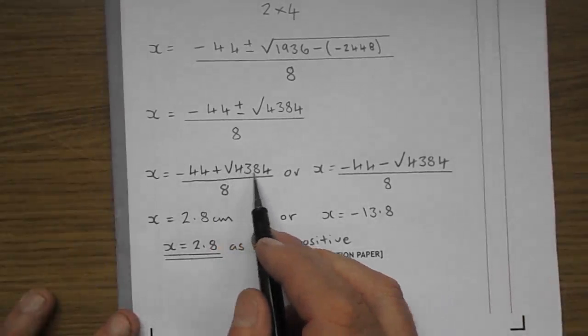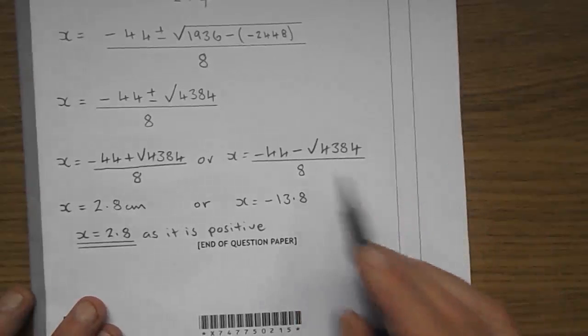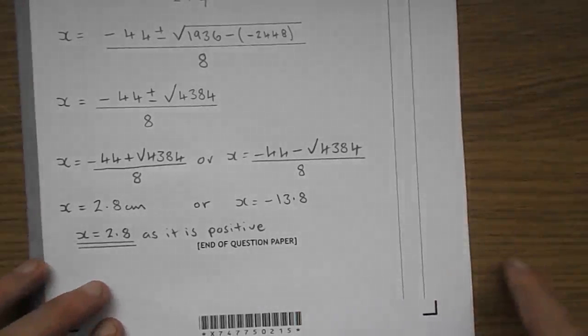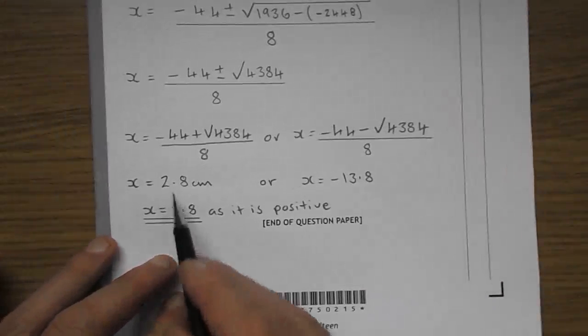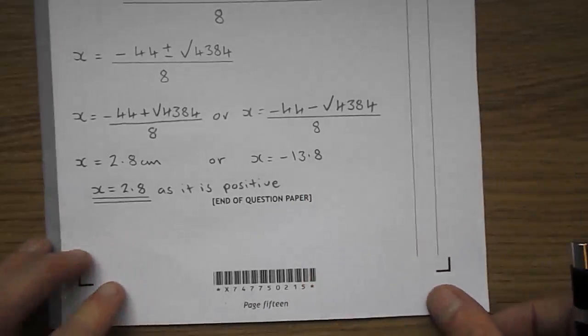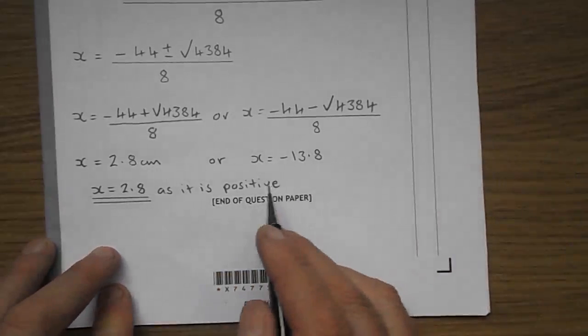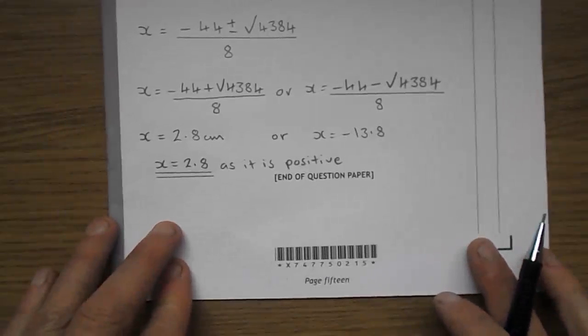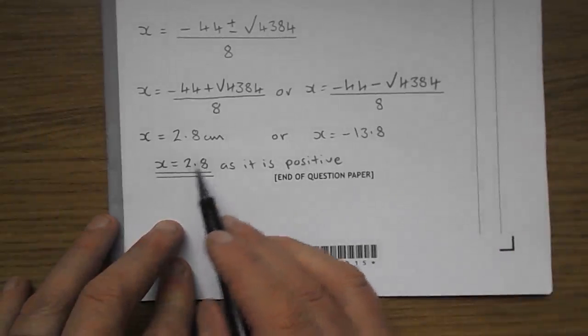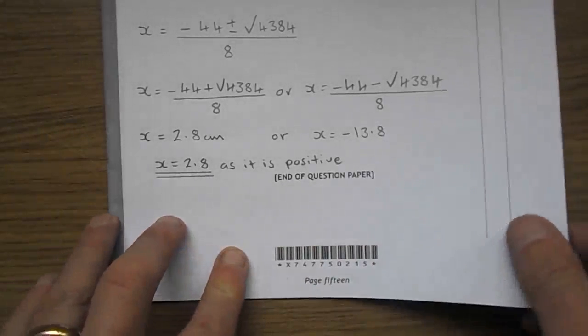So you're left with two solutions here. Minus 44 plus root 4384 over 8, or minus 44 take away root 4384 over 8. So you're left with two answers of 2.8 and minus 13.8. Now, 2.8 is the only sensible one. That's negative. It can't be negative. It's a number in a frame of a picture, so it's 2.8 because it's positive. And that's the end of the question paper.